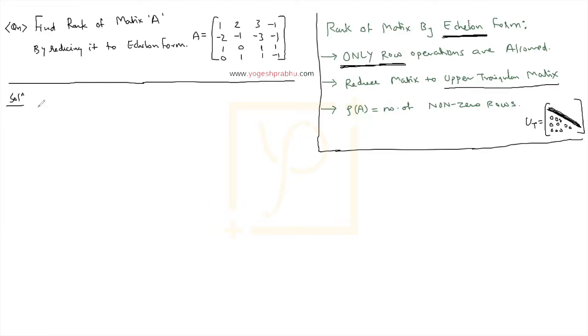So only row operations are allowed. Let us begin with the row operations then. The first operation I will do is row 2 becomes R2 plus 2 times R1.